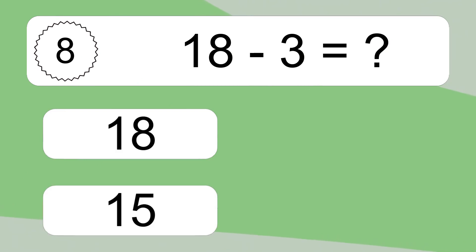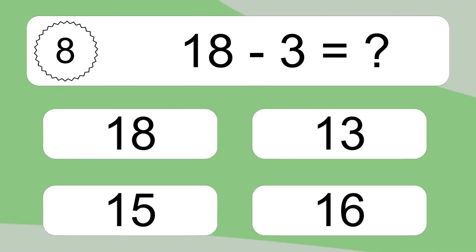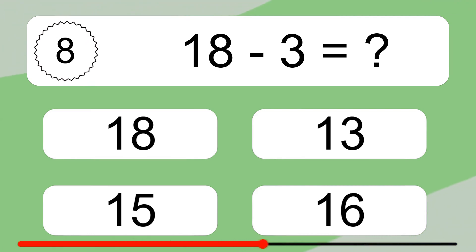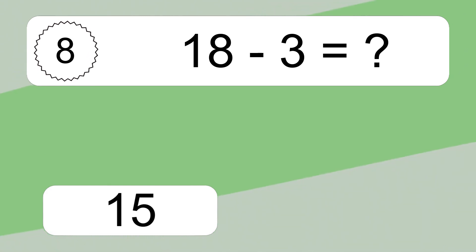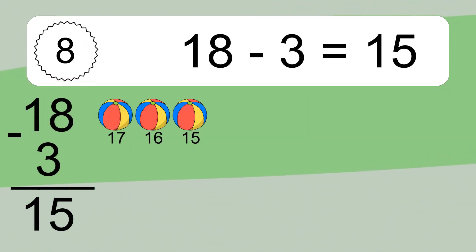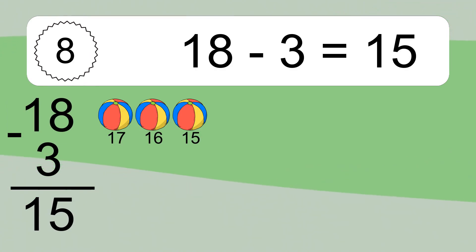18 minus 3 equals what? 18 minus 3 equals 15. Let's count it. 17, 16, 15.